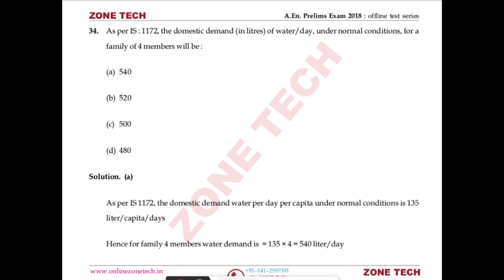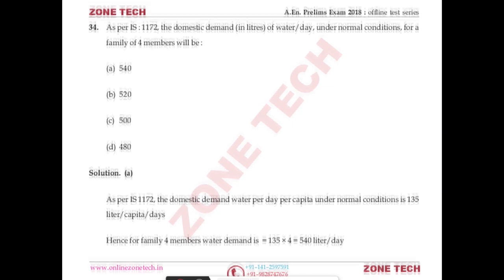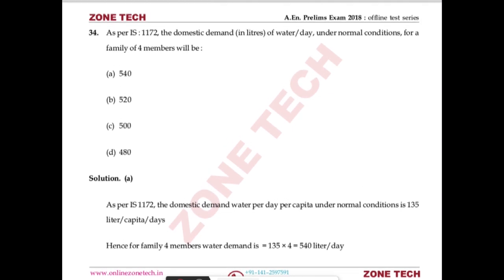Question number 34: as per IS 1172, the domestic demand of water per day under normal conditions for a family of four members. According to Indian standards, the domestic demand is 135 liters per capita per day. For four members: 135 × 4 = 540 liters per day. Answer: A.